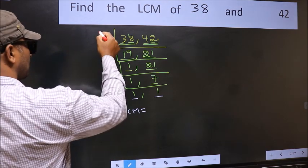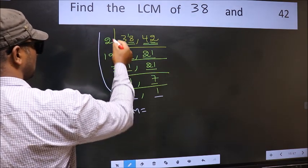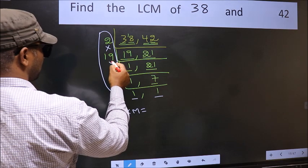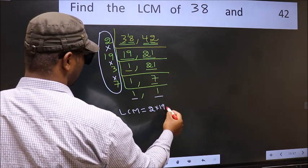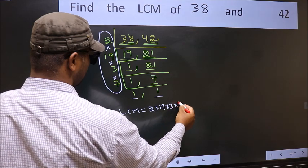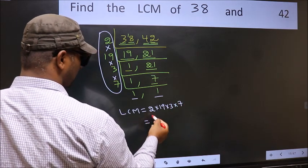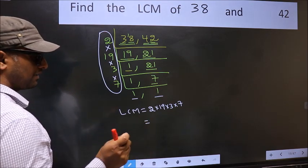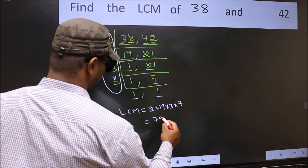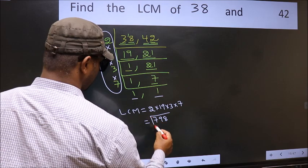LCM is the product of these. We get 1 in both places, and we multiply these numbers: 2×19×3×7. When we multiply these numbers, we get 798 as our LCM.